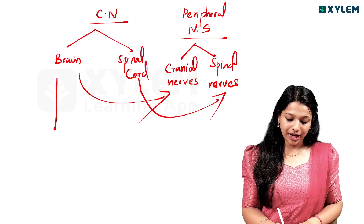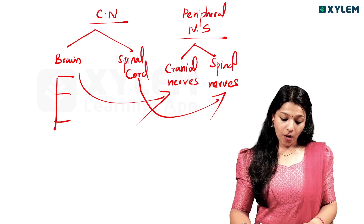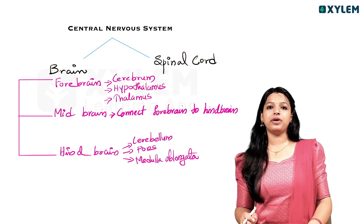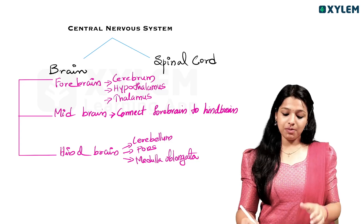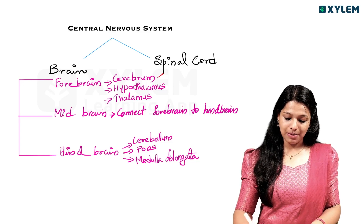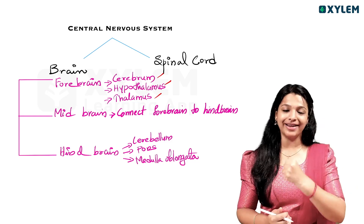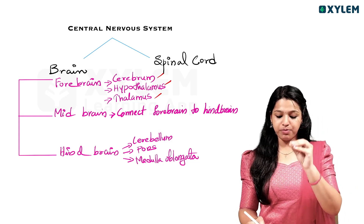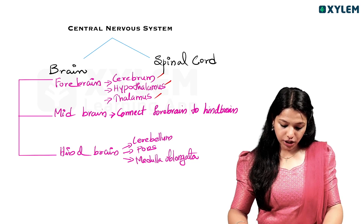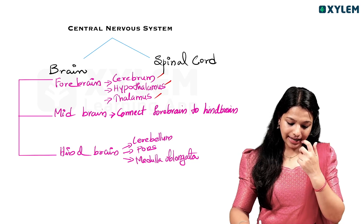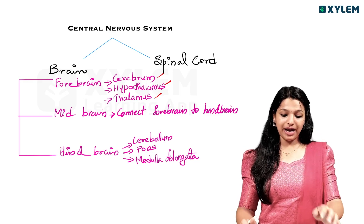The structural classification of the brain is forebrain, midbrain, and hindbrain. Forebrain consists of the cerebrum, hypothalamus, and thalamus. Midbrain connects the forebrain and hindbrain. Hindbrain consists of the cerebellum, pons, and medulla oblongata.